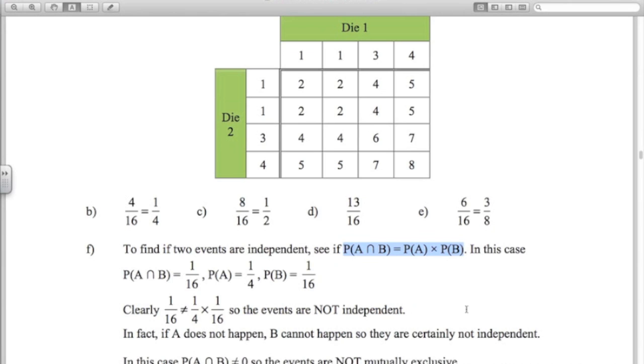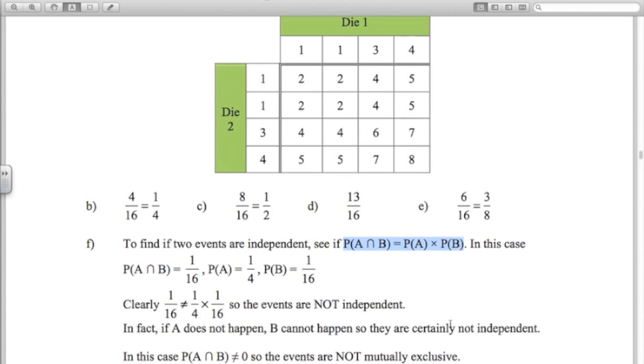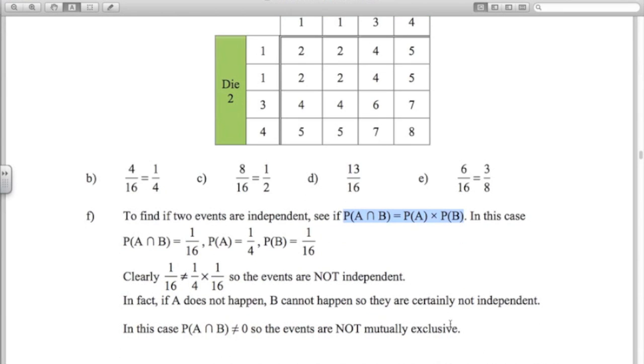In fact, you can't get a total of 8 unless you get a 4 on the first dice. So clearly, these two events are not independent. Clearly, the second event happening depends on the first one happening. So definitely not independent. In answer to the second one, probability of A intersection B is not 0, so the events are not mutually exclusive.